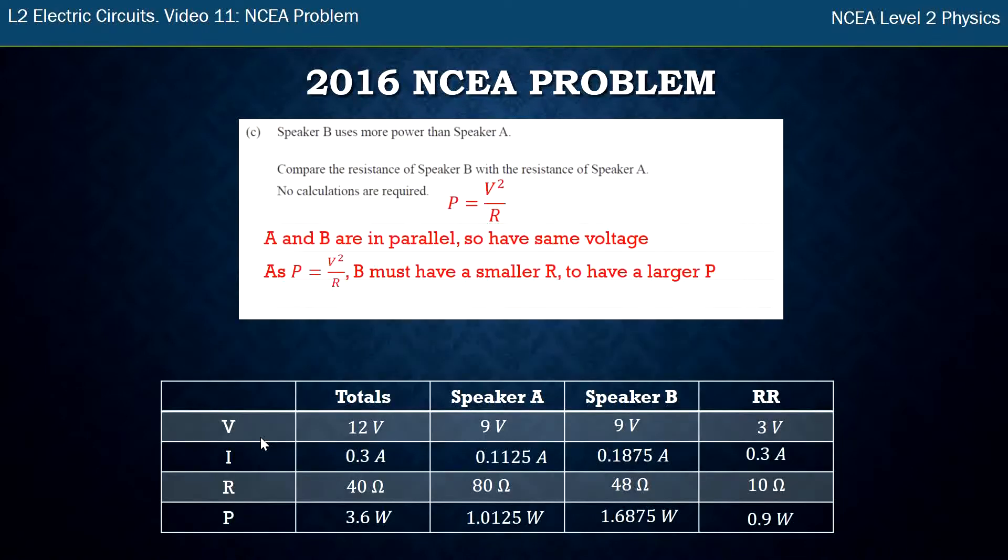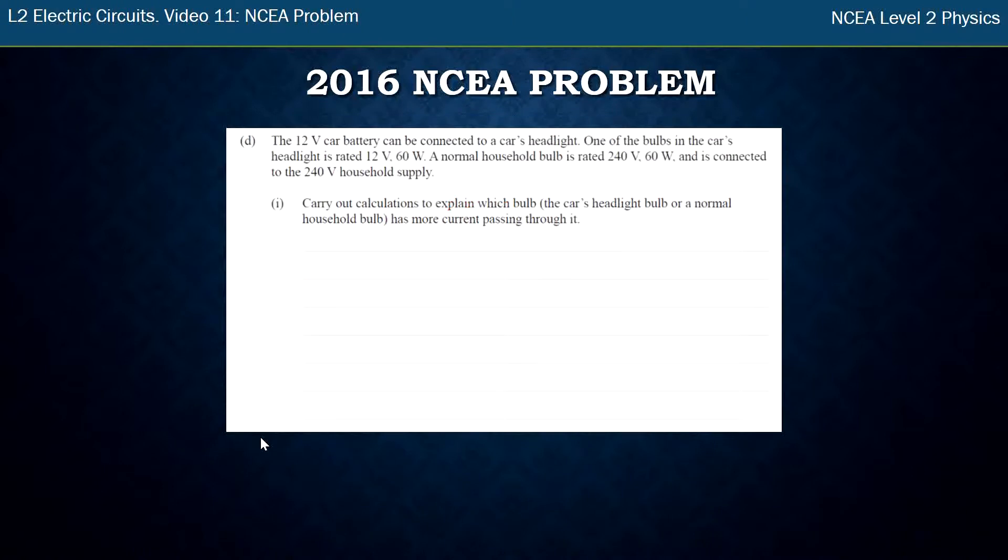So up to there this is another merit question and now we're on to this excellence DI and DI2 is together as an excellence question. So I've got a new circuit now. 12 volt car battery is connected to a car headlight. It's rated 12 volt 60 watts. A normal bulb is 12 volt 60 watts. Carry out calculations to see which has the most current passing through it. So it's pretty easy.